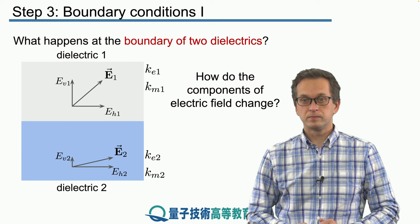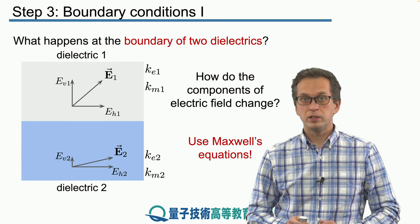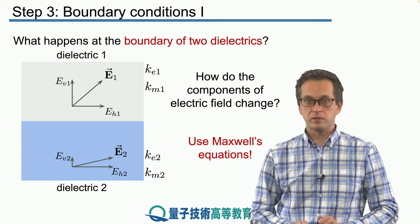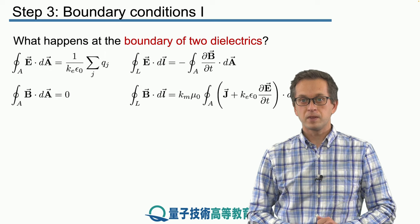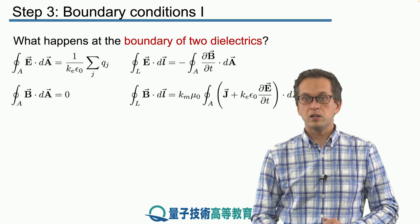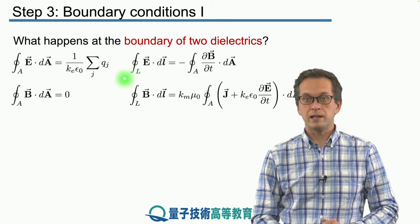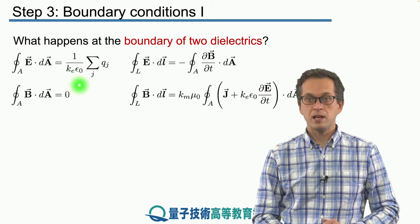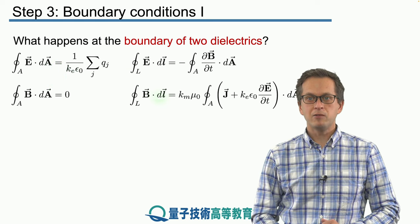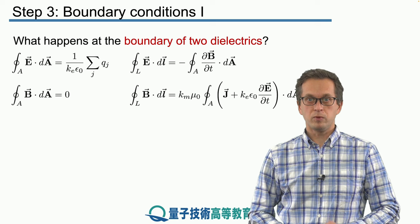So how do we do it with our good old friends, the Maxwell's equations? Here they are in the form written for a dielectric with some coefficients Ke and Km, but otherwise they are the same as before with the same meaning.